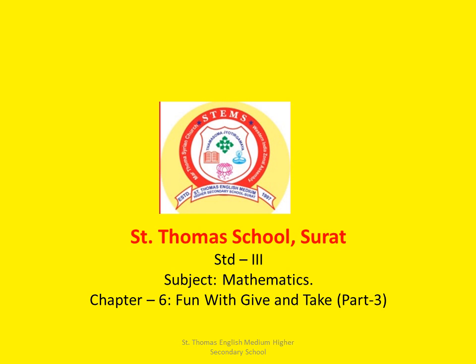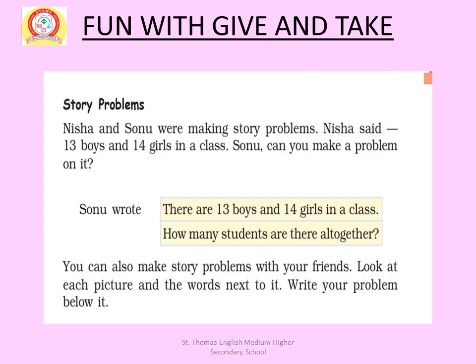Welcome to Mathematics class, Chapter 6 — Fun with Give and Take, Part 3. This is a story problem. The statement is: there are 13 boys and 14 girls in a class. You have to make a problem from this statement. A problem means you have to make a question. The question Sonu made is: how many students are there altogether?